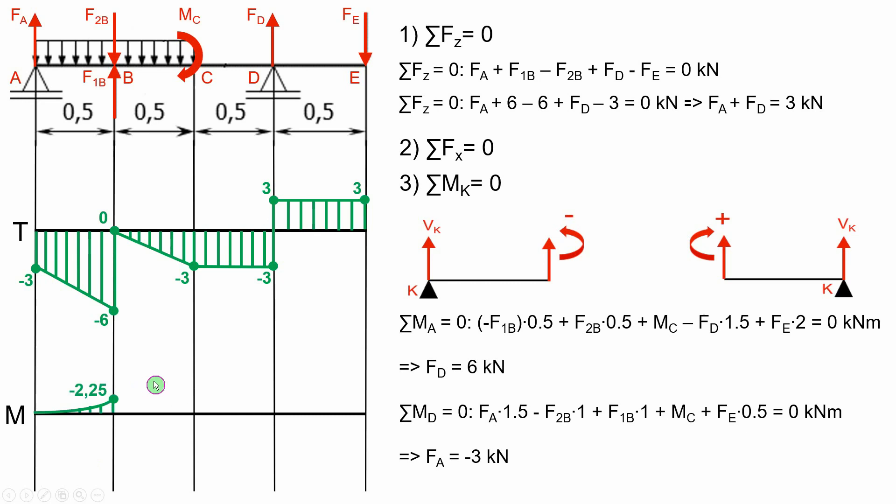On BC section, we will add to minus 2.25 the value of this triangle's area and we will reach minus 3. Reaching CD section, we see this concentrated moment here, which rotates clockwise in the positive direction, so we add it to minus 3 and reach 0.